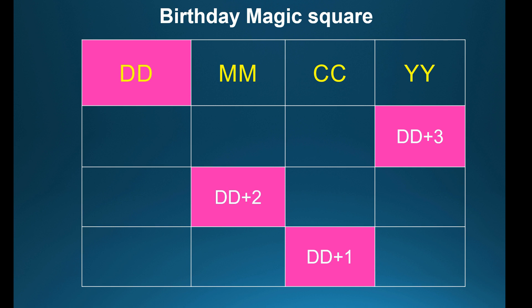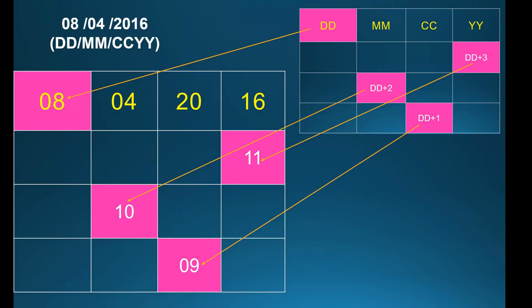Now start the birthday magic square formula for the date. You should leave the date column, and in the remaining columns write date plus 1, date plus 2, date plus 3. Substituting the values — date is 8 — you get 9, 10, 11.